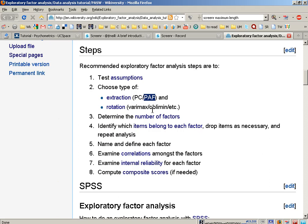Principal axis factoring only analyzes the shared variance amongst the items, and it's more often used when you have a theoretical question and you do not necessarily want to go on and create factor scores.